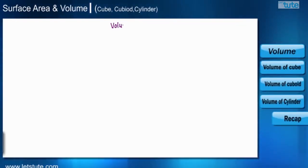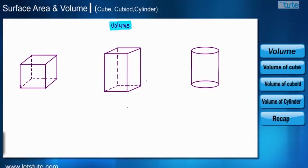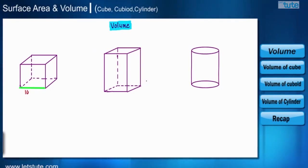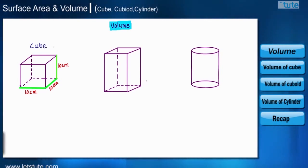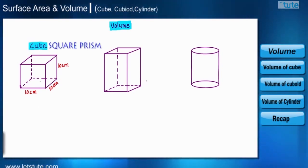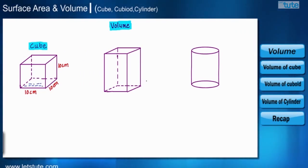In this session we will learn about volume. As you can see, we have three containers. The first container has a length of 10 centimeter, breadth of 10 centimeter, and height of 10 centimeter. Such a shape is called a cube — many also call it a squared prism.